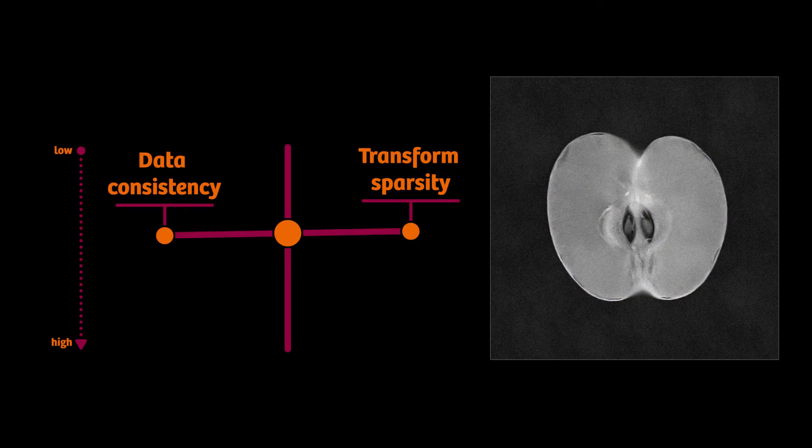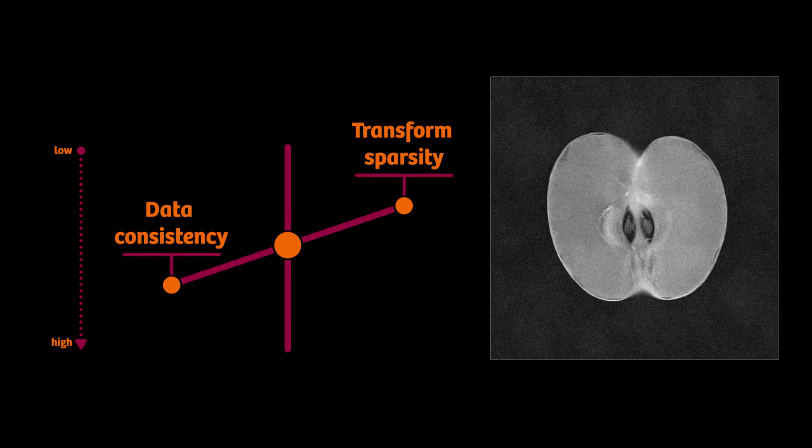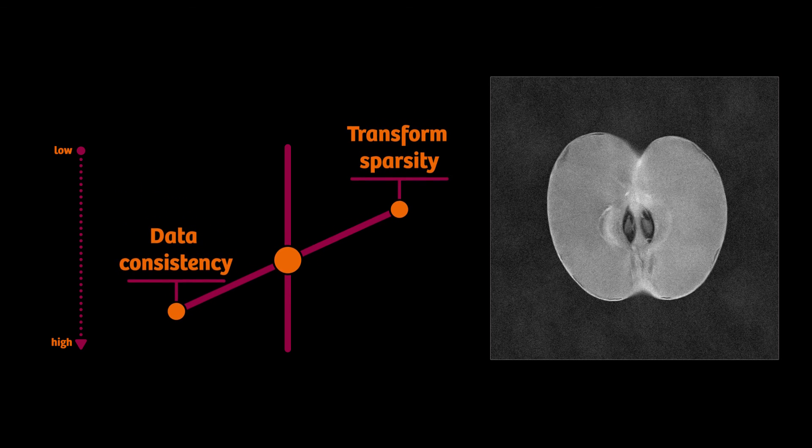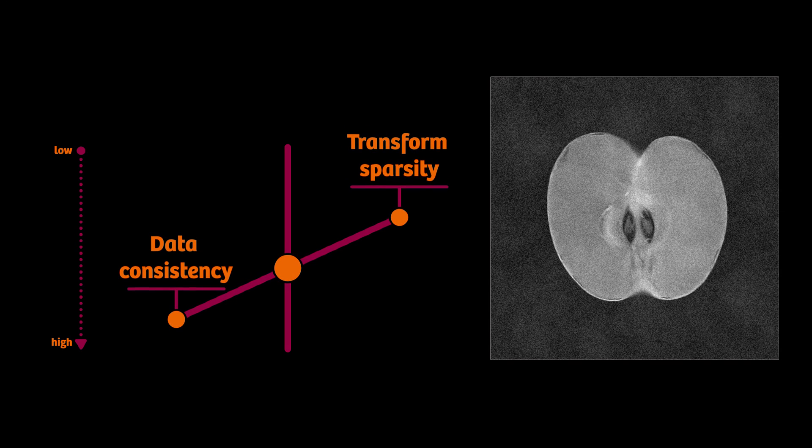Let's look at it the other way around. If we overweight data consistency, we filter out too little noise, or in the extreme case, nothing at all. This means data consistency will be at 100%, but there's no improvement in image quality. Actually, just the image we started with—a noisy apple.